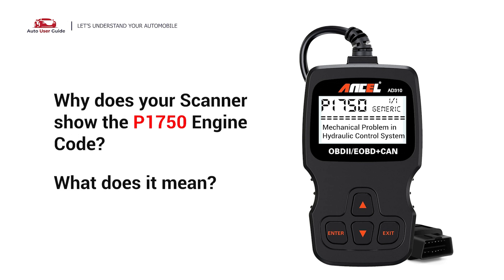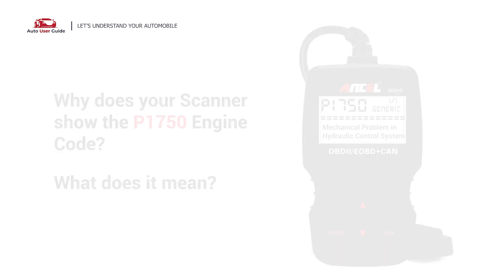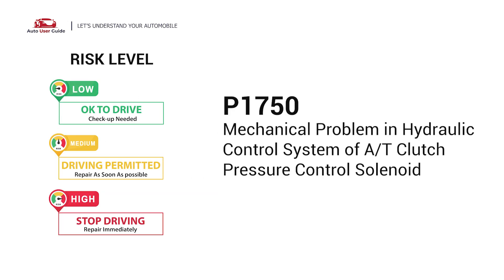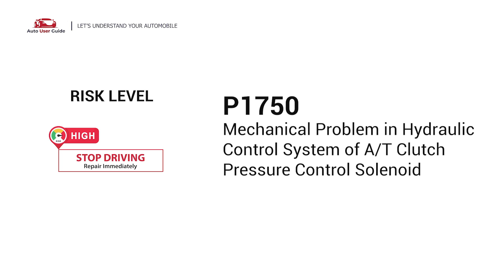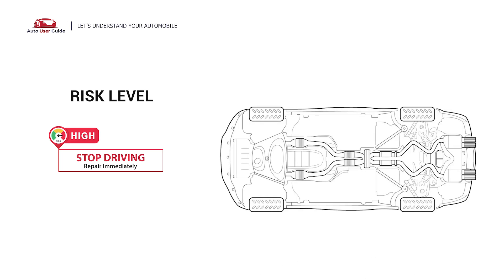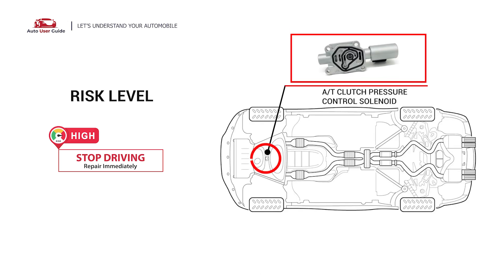Why does your scanner show the P1750 engine code? What does it mean? P1750 is a diagnostic trouble code for a mechanical problem in the hydraulic control system of the automatic transmission clutch pressure control solenoid. It indicates that there has been a malfunction in the range position switch.